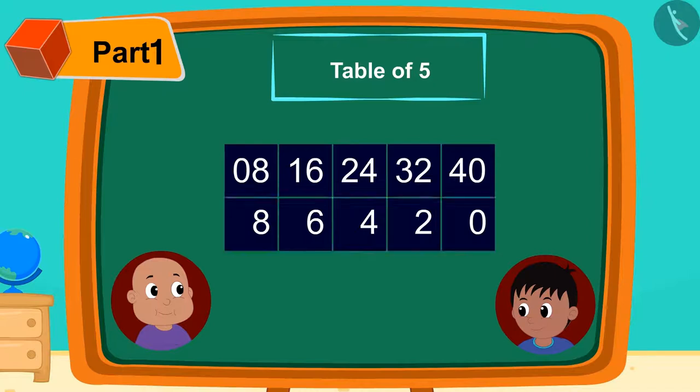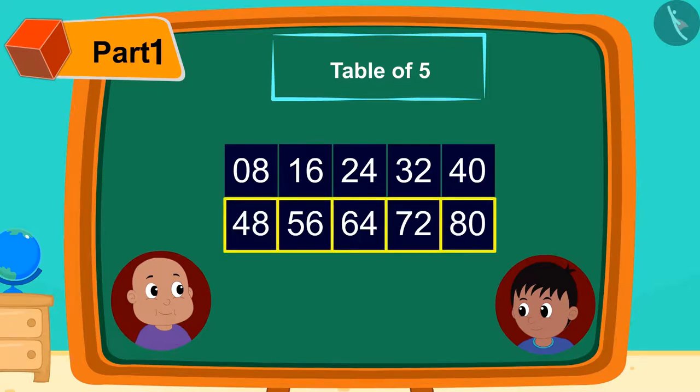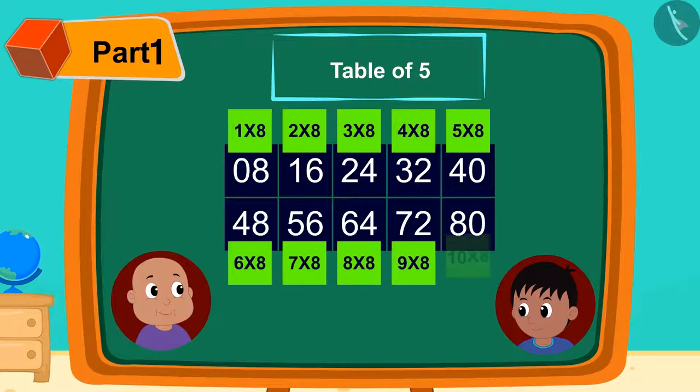Then in front of the digits written in the second line, he wrote 4, 5, 6, 7, 8 in this way. And the table of 8 was ready.